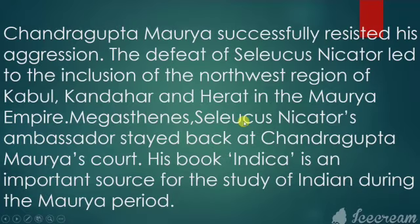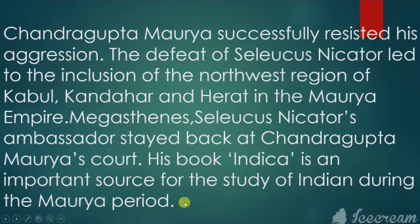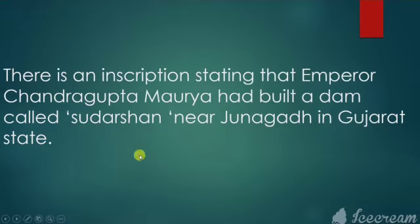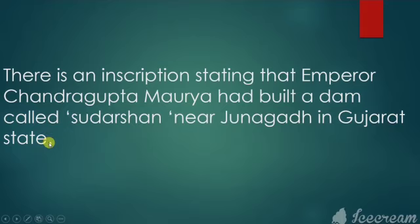Megasthenes, Seleucus Nicator's ambassador, stayed at Chandragupta Maurya's court. His book Indica is an important source for the study of India during the Maurya period — it contains everything about the Maurya empire period. There is also an inscription stating that Emperor Chandragupta Maurya built a dam called Sudarshan near Junagadh in Gujarat state.